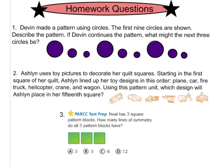Let's go ahead and take a look at our homework questions. There are just three for tonight. Number one says, Devin made a pattern using circles. The first nine circles are shown. Describe the pattern. If Devin continues the pattern, what might the next three circles be? Look closely at what it is. We have a big, medium, small, back to big, medium, small, then back to big, medium, and small. What would the next three circles be?